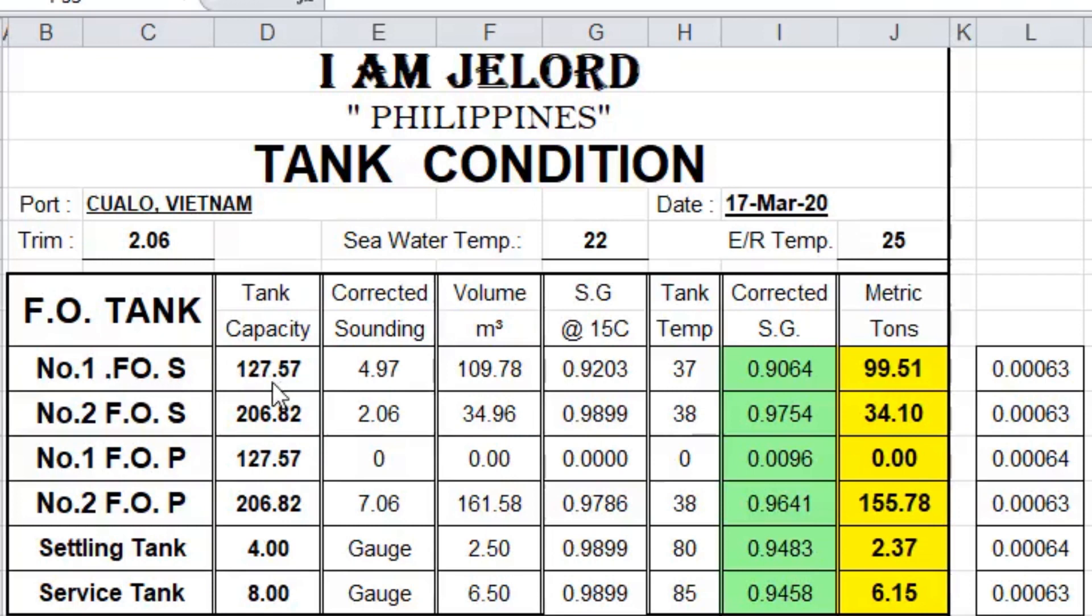I'm going to explain the number one fuel oil tank, which has a capacity of 127.57 cubic meters and a corrected sounding of 4.97, and a corrected volume in cubic meters of 109.78.